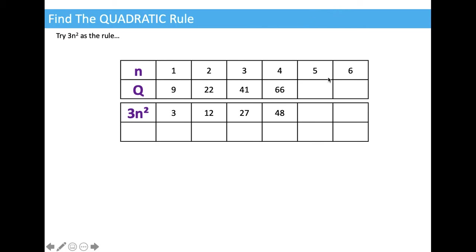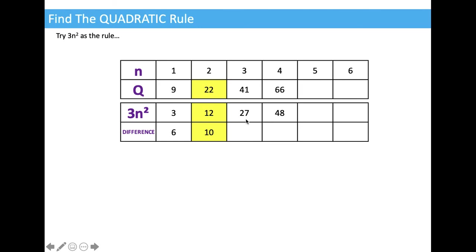Let's have a look at what we got versus what we were looking for. When we wanted Q to be 9, the rule only gave us 3 — a difference of 6. When we wanted 22, the rule gave us 12 — a difference of 10. When we wanted 41, we only got 27 — a difference of 14. When we wanted 66, we only got 48 — a difference of 18.